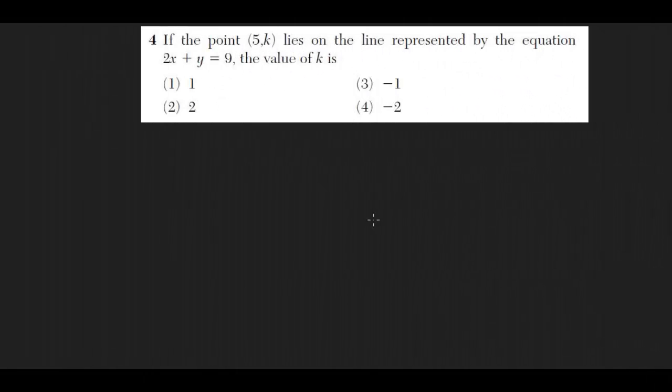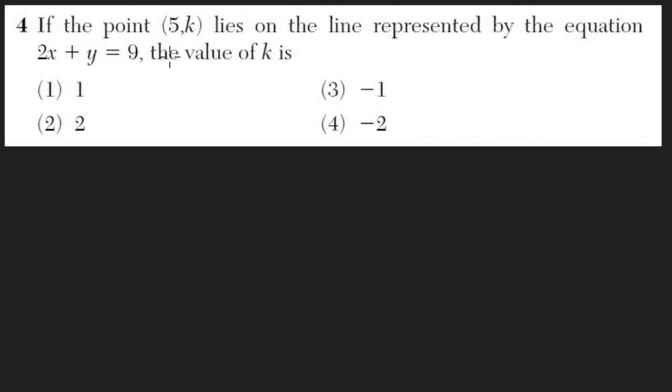Hello friends, welcome back. I had been asked a question from a recent examination. The question is: If the point (5,k) lies on the line represented by the equation 2x + y = 9, the value of k is. We have four options: 1, 2, -1, -2.